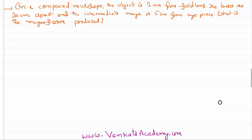Hello everyone, welcome to this video lesson. In this video lesson we are solving a problem on ray optics compound microscope. Let's read the problem: In a compound microscope, the object is 1 centimeter from the field lens, the lenses are 30 centimeters apart, and the intermediate image is at 5 centimeters from the eyepiece. What is the magnifying power produced?